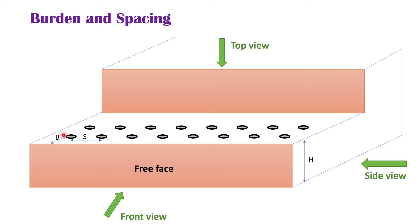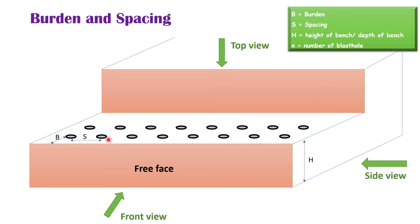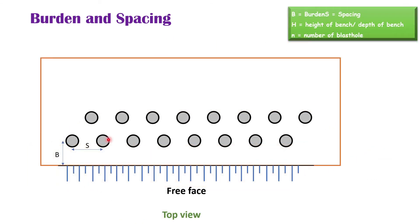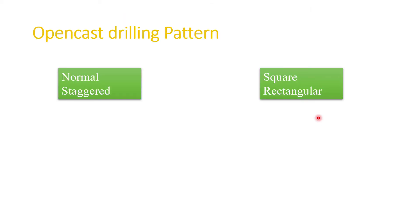This is the burden — the distance from the free face to the borehole — and the spacing is the distance between each borehole in the same row. This is the first row and this is the second row.